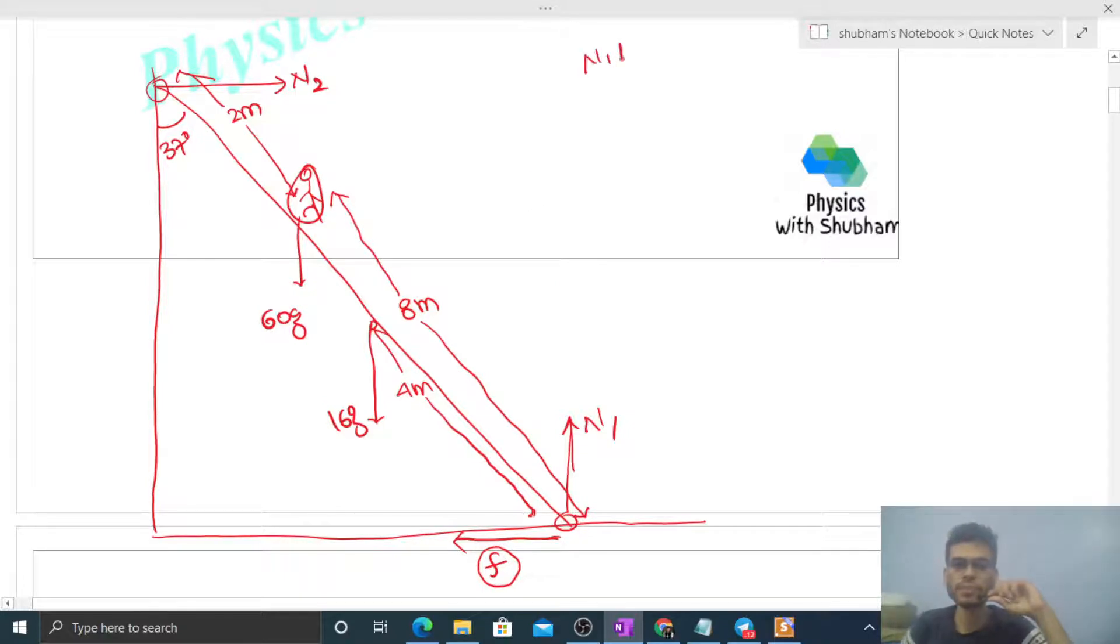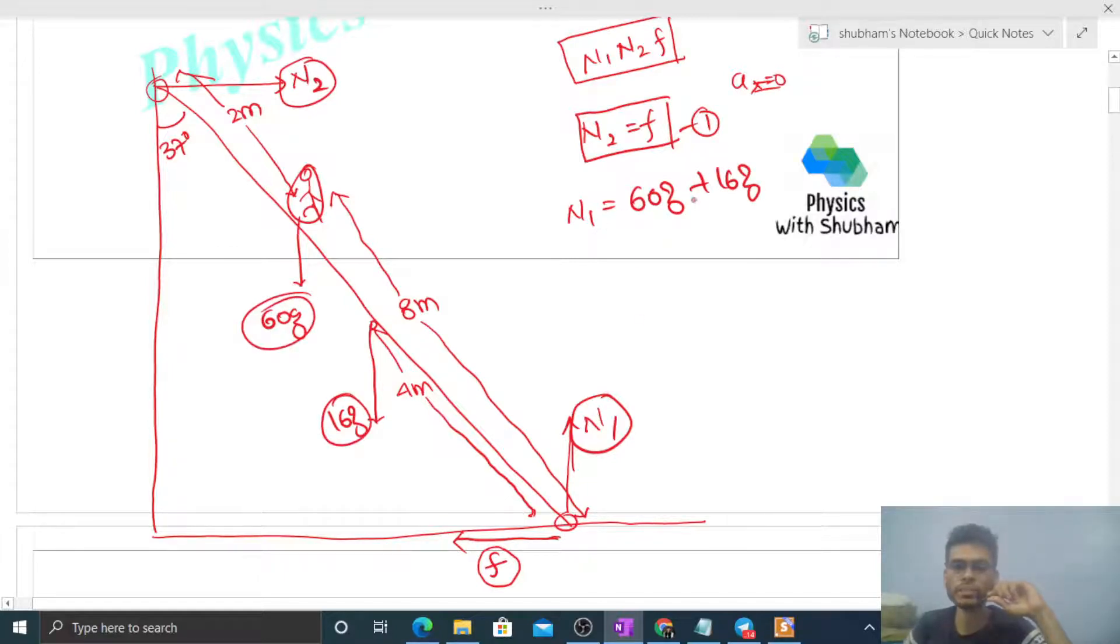Now let's check variables. N1, N2 and friction force - three variables. So we have to write three equations. This rod is in translational equilibrium. It has no acceleration in x direction or y direction. It means net force in x direction will be zero. That is simply N2 is equal to friction force. So one equation is this. Similarly balance forces in vertical direction. N1 will be 60g plus 16g. So N1 value you can find out directly. It is 76g. Putting the value of g, you can find out the value of N1.